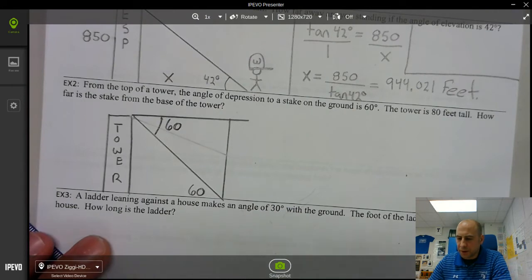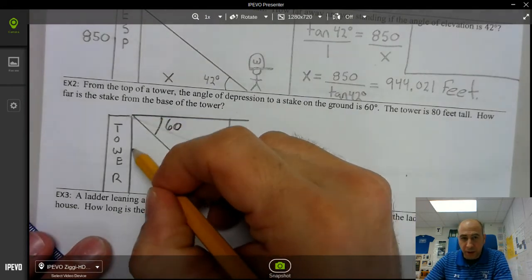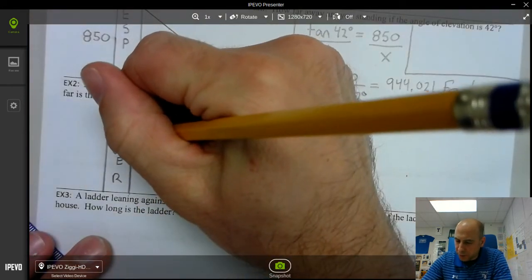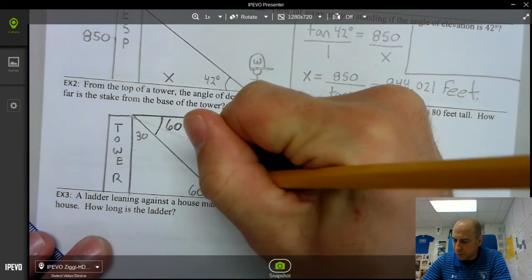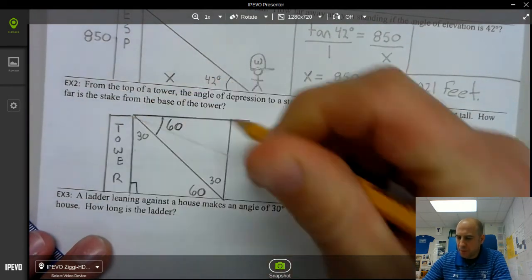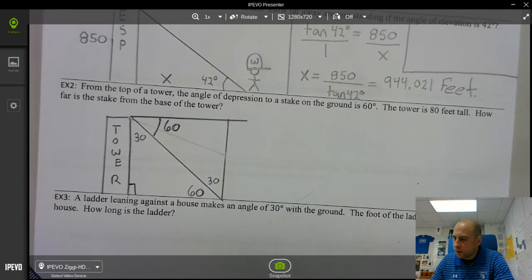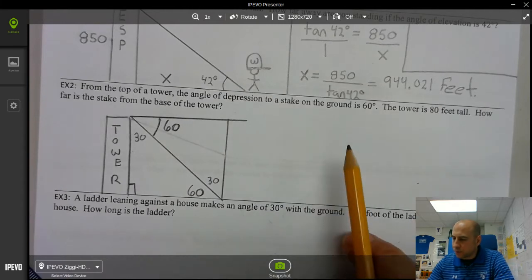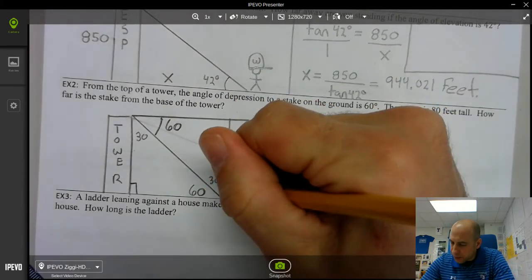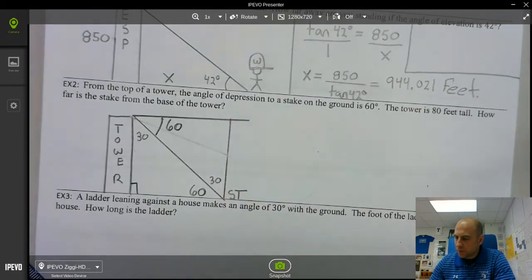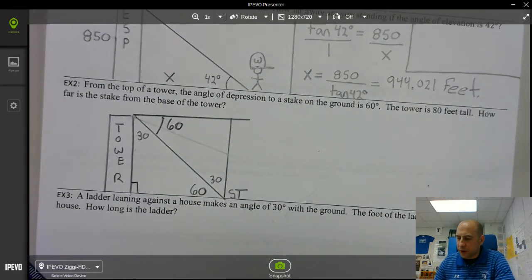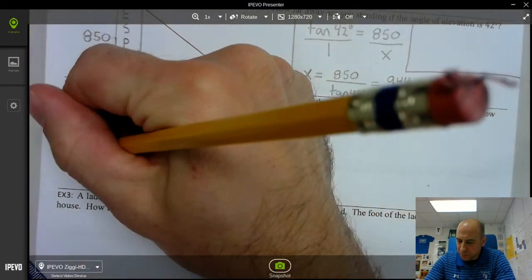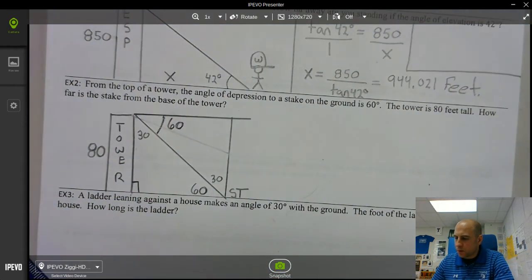And we know that because this makes a right angle. So this has to be 30 and this has to be 30. Okay. Alright. So it says stake on the ground. So this is your stake on the ground. Now the tower is 80 feet tall. Okay.